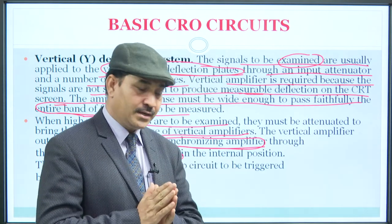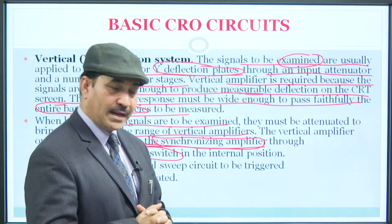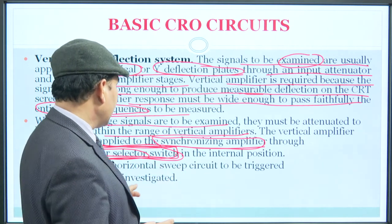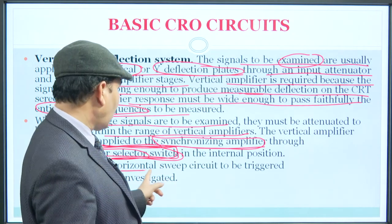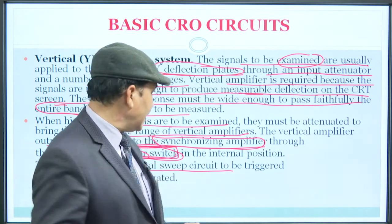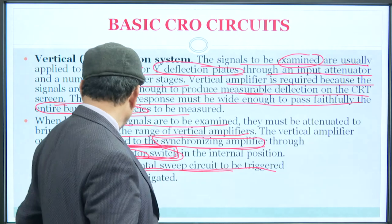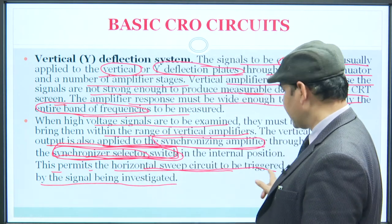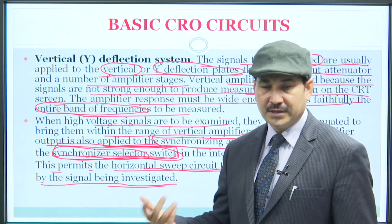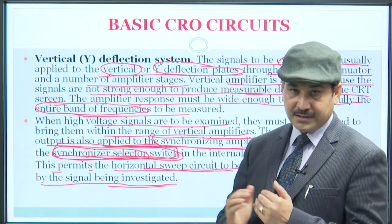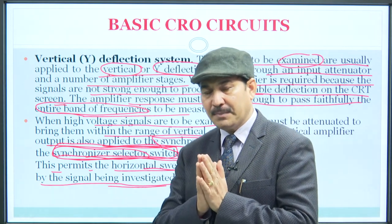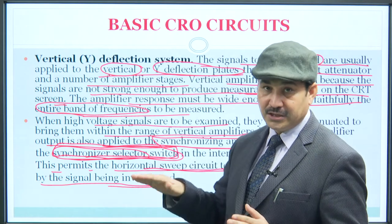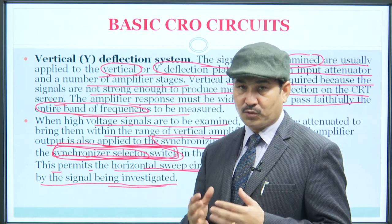The vertical amplifier output is applied to the synchronizing amplifier, and that is applied with the help of a synchronizer selector switch which is in the internal position. This permits the horizontal sweep circuit to be triggered by the signal being investigated. This is the coordination of the circuit, which needs to be triggered by the signal when you are doing this investigation. Synchronization is necessary — the signal on the vertical plates is coordinated with the synchronizing selector through the horizontal sweep circuit.